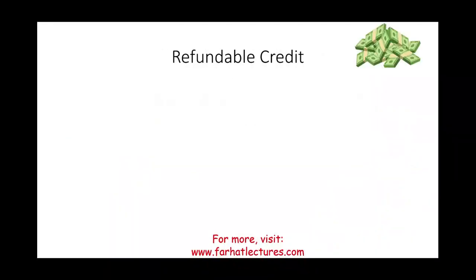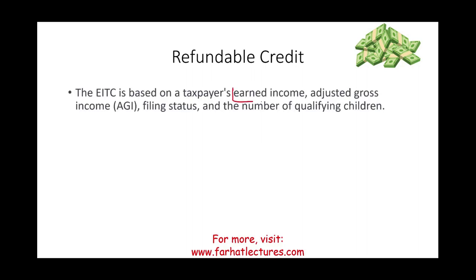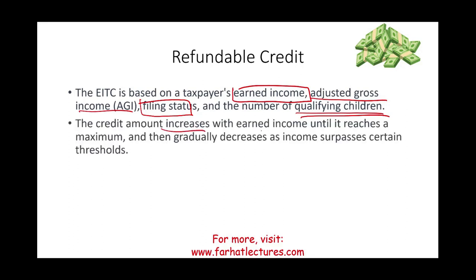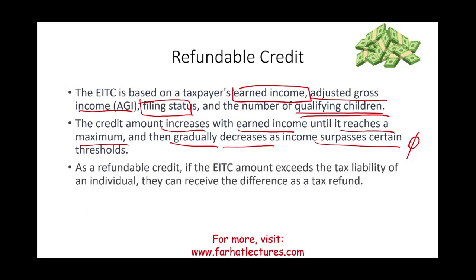The EIC is a refundable credit based on your earned income, your adjusted gross income (AGI), your filing status, and the number of qualifying children. The credit increases with earned income until it reaches a maximum amount — which changes every year — then gradually decreases as income surpasses that amount, until you no longer qualify.